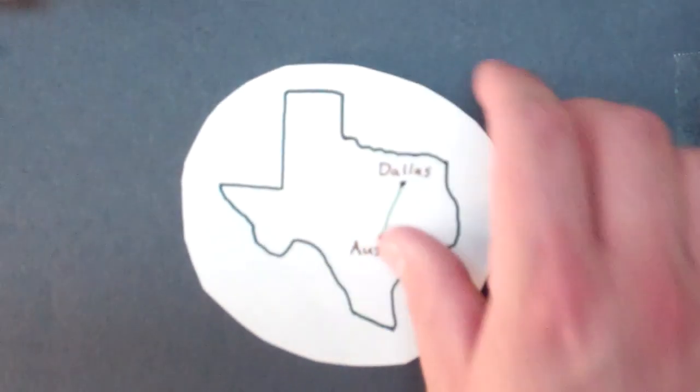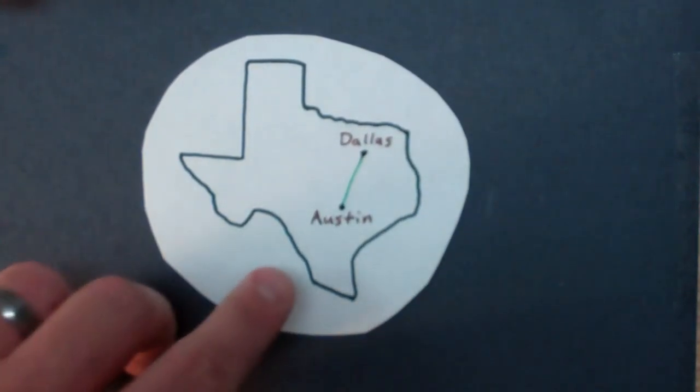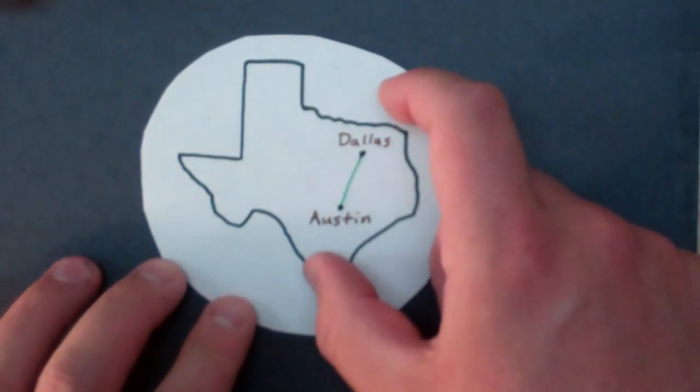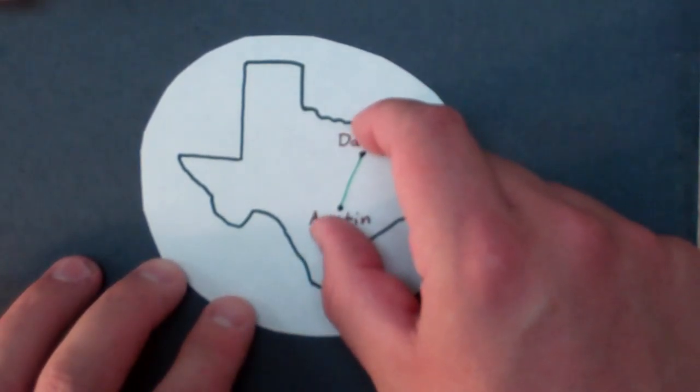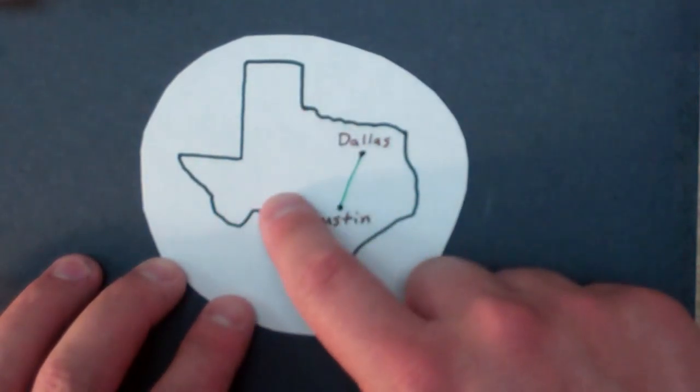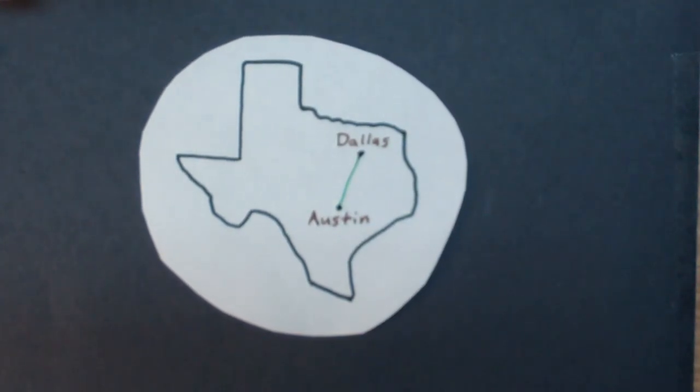Also, let's say if we had a map and we wanted to get from Dallas to Austin. Well, a point would be used to locate Dallas. A point is used to locate Austin. And then you have a line segment, which is part of a line, which would help find the distance between these two points. And then a plane would be used to act as the surface of the state of Texas. So we use points, lines, and planes all the time in the real world. Hopefully, this helps you understand what a point, line, and plane is better than you did before.